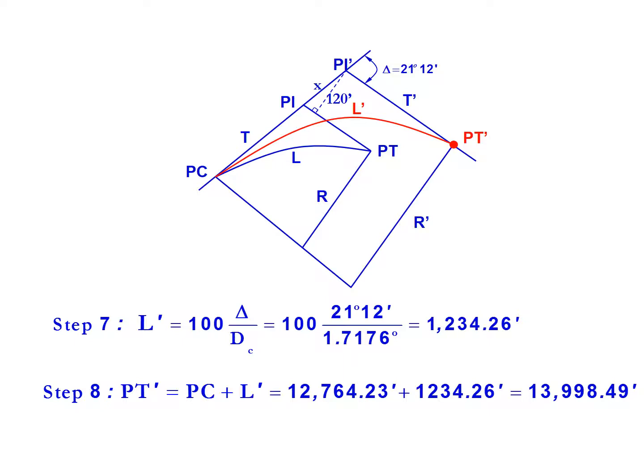Subsequently we can find our PT prime, our new point of tangency, which is the point of curvature plus the new curve length. So 12,764.23 feet plus our new curve length of 1,234.26 feet gives us a PT prime of 13,998.49 feet. In terms of stations, that's a PT prime station of 139 plus 98.49.